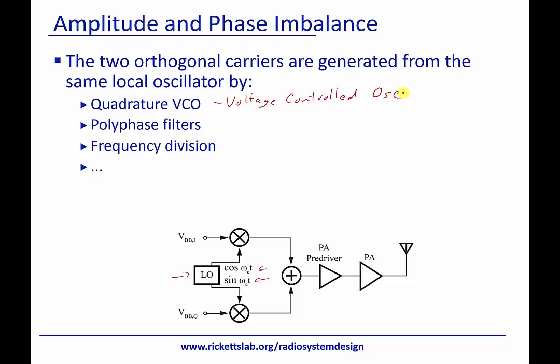A polyphase filter is just a set of filters that basically — if you put in a sinusoid, it's going to output a sinusoid in phase and then a sinusoid that is out of phase. It does this just by using LCs as a phase shifter to give us these two. Typically this would be a 45-degree phase shift, and this would be a minus 45-degree phase shift from the original signal.